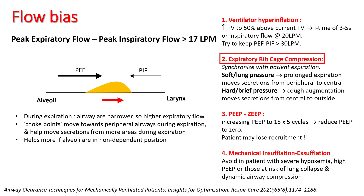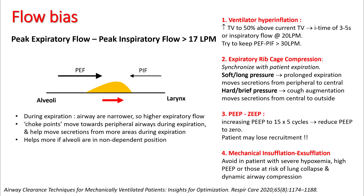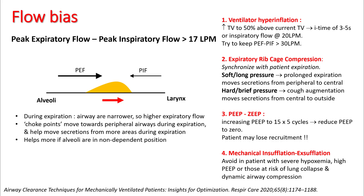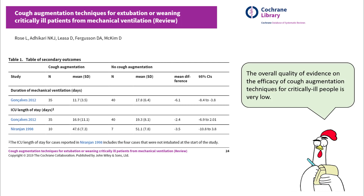The second method is expiratory rib cage compression, where you synchronize pressing the rib cage with patient expiration. Applying soft and long pressure moves secretions from peripheral to central airways; applying hard and brief pressure moves secretions from central airways to outside. Using the PEEP and ZEEP method can also achieve positive flow bias — increase PEEP to 15 for 5 breathing cycles, then reduce to 0. However, understand the patient may lose recruitment, so select patients carefully. Mechanical insufflation-exsufflation devices can also create positive flow bias by controlling inspiratory and expiratory flow rates.